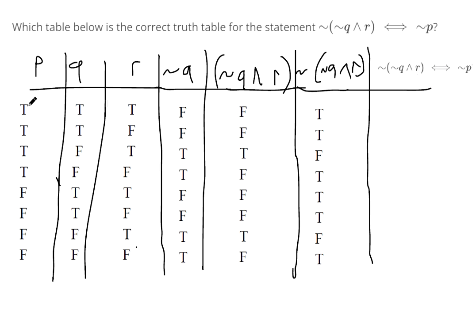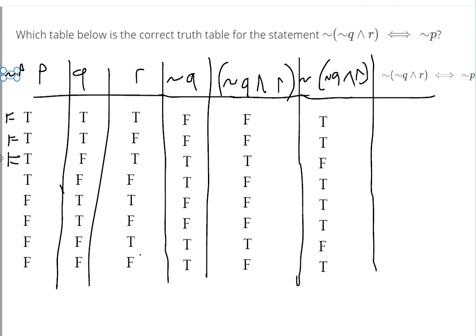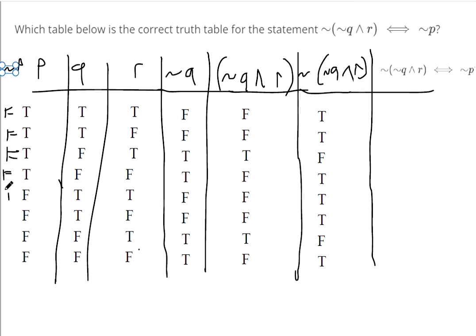So the negation of P would be false, false, false, false, true, true, true, true. So negation of P is false. This crazy thing that we just made is true. They're not both the same. We're going to mark this F for the first row. We've got false, we've got true, so this is another F. We've got false, we've got false, oh they're both false, so we get to mark this true because it's the biconditional.